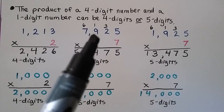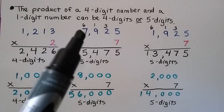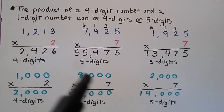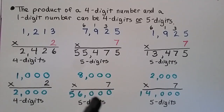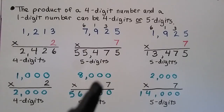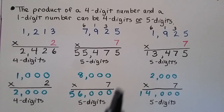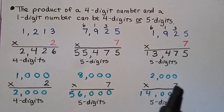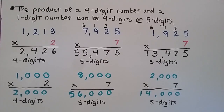For 7,925 times 7: the 9 tells the 7 to go up to an 8, so we have 7 times 8,000. However many zeros are in the factor will be in the product, so we do 7 times 8, which is 56, and add the 3 zeros — giving us 56,000, which is 5 digits. For another example, the 9 tells the 1 to go up to a 2, so we multiply 2,000 times 7, which is 14,000 — clearly 5 digits.